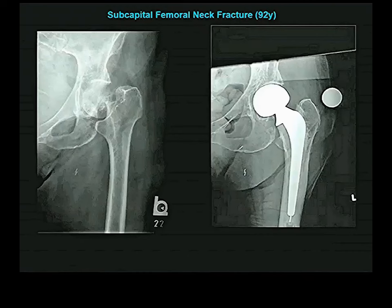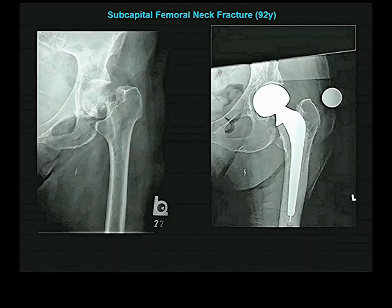For older patients, they will simply take the neck and head of the femur off and put in a metallic one. The acetabulum is not affected in this surgery — it remains intact. All they've done is replace the neck and the head of the femur.